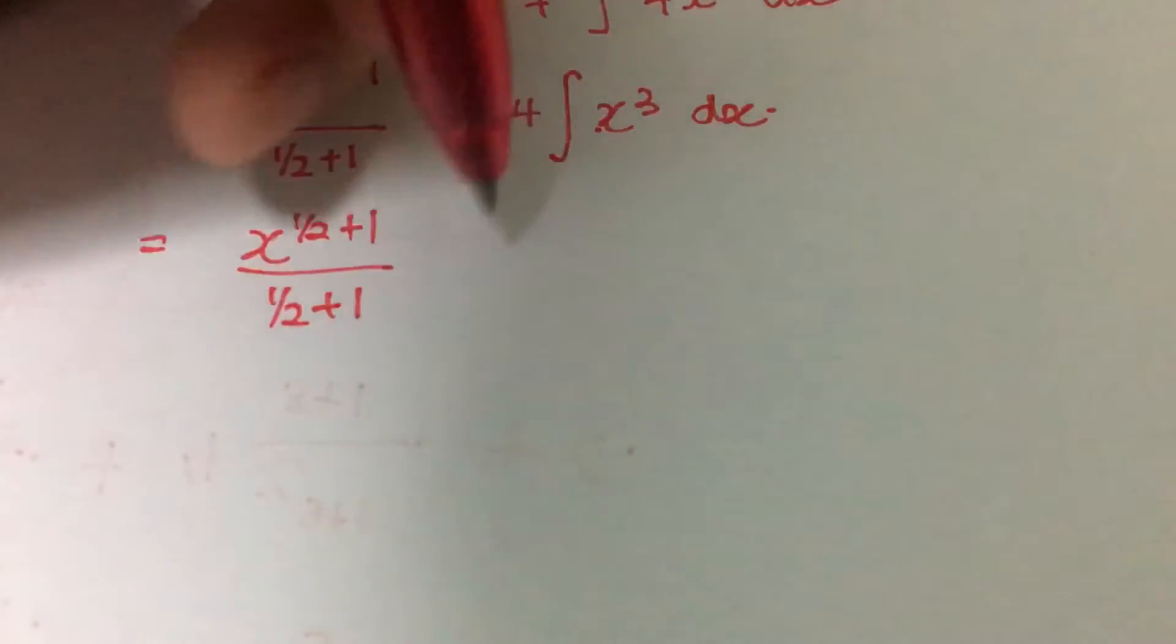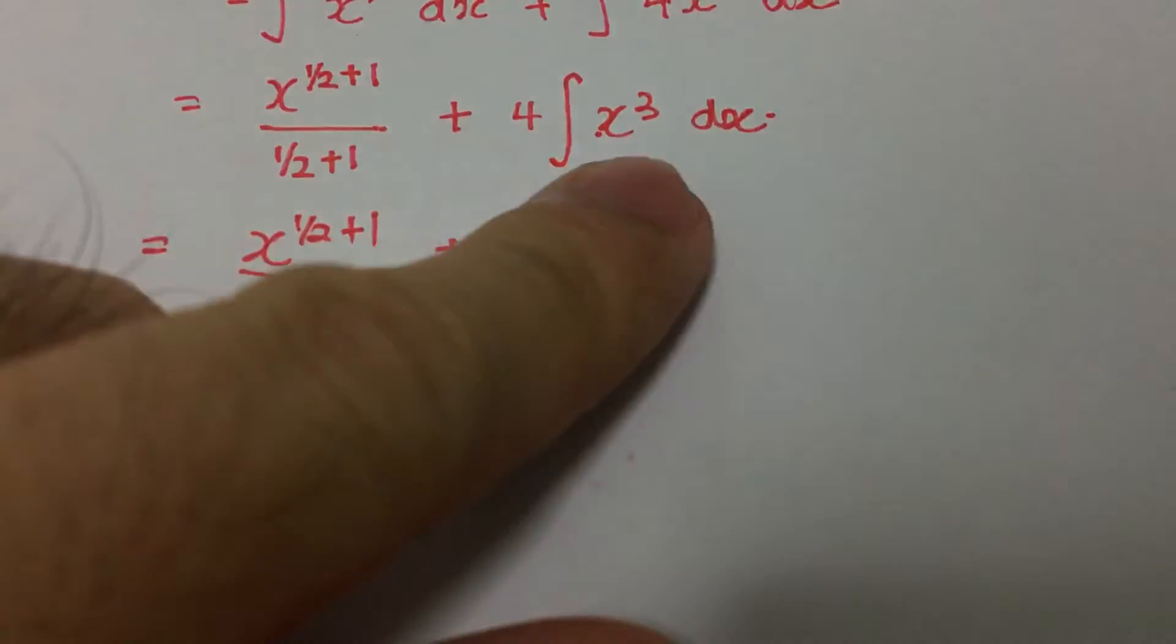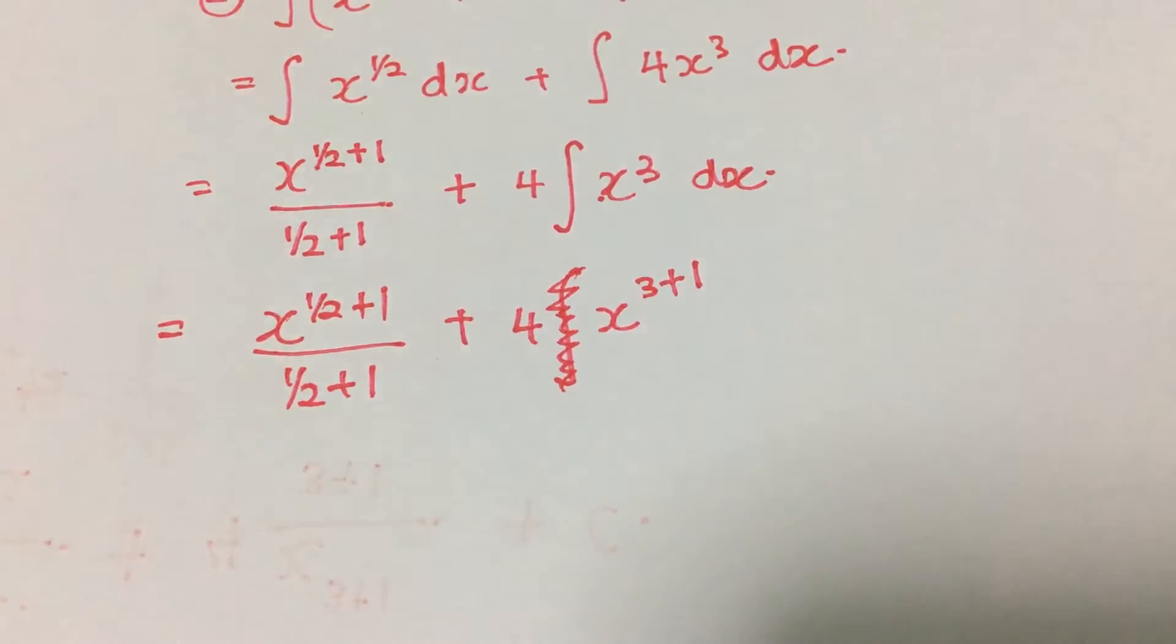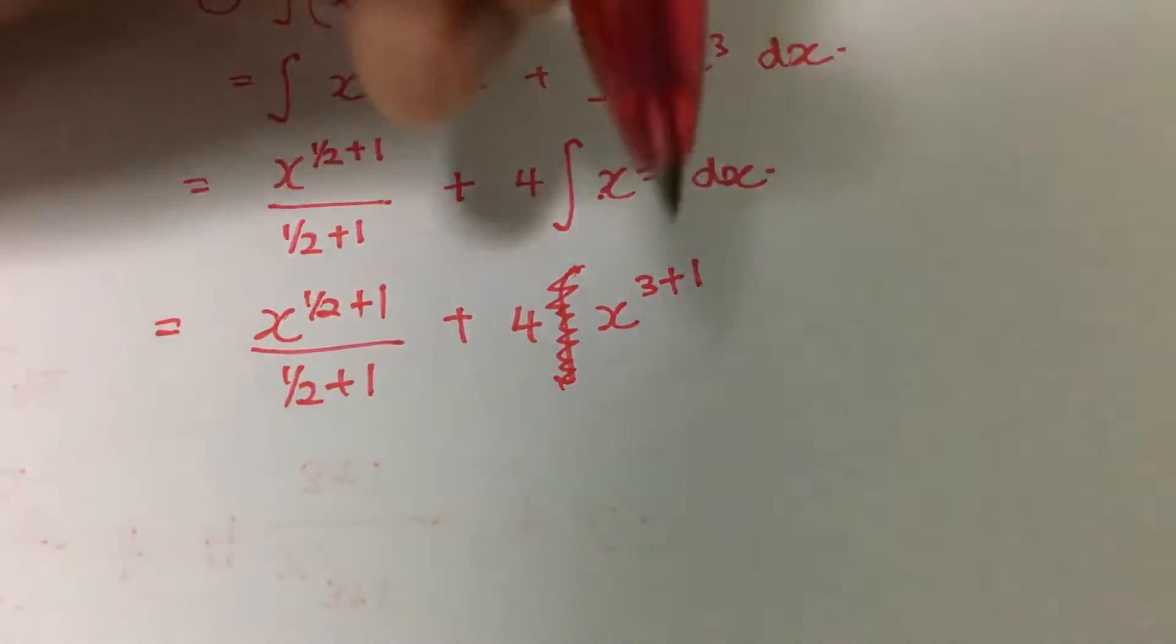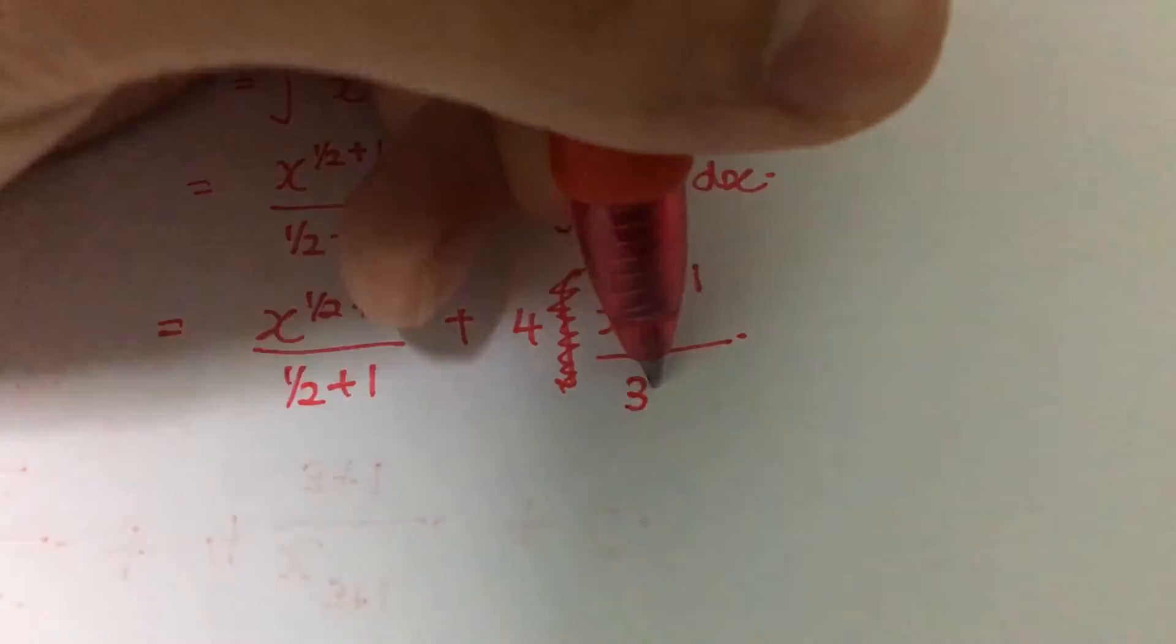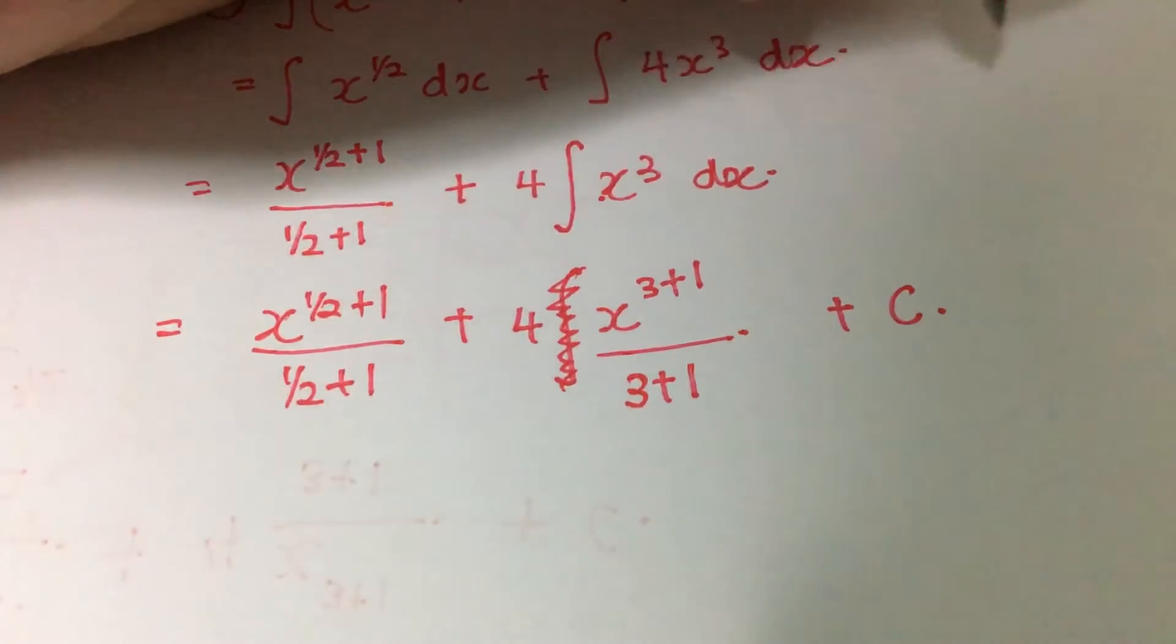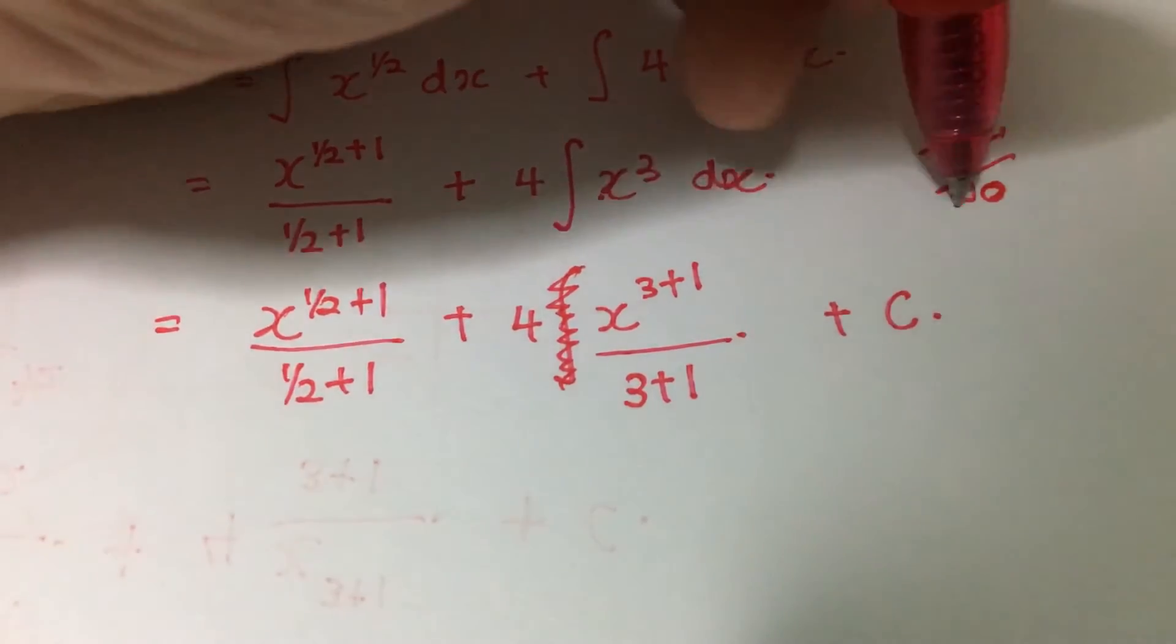After that we proceed to do the integration. When we deal with the power, we have to add 1 to the power itself. At the same time, we have to divide by the total number of powers here which is 3 plus 1, and then we have to plus a constant. Every time we do an indefinite integral integration that doesn't involve value ranges, we have to plus a constant.